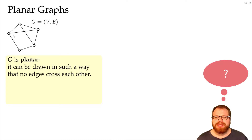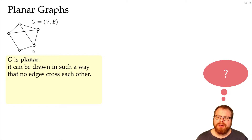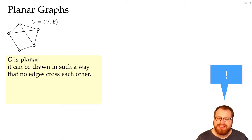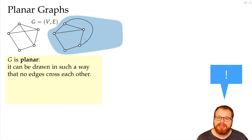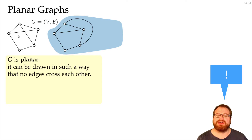Is this example a planar graph? Yes it is, because we can take this edge and reroute it, draw it like this, and now we have a drawing without any crossing. So while this is not a planar drawing, this is a planar graph.